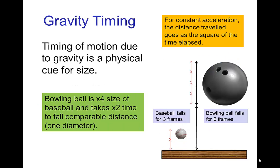The question is how do we establish a sense of size or scale in animation? One of the simplest physical cues for the size of an object is the timing of its motion when falling. For example, let's say a baseball is falling from an apex and it falls its own diameter in three frames — that's just how far it falls given its diameter.